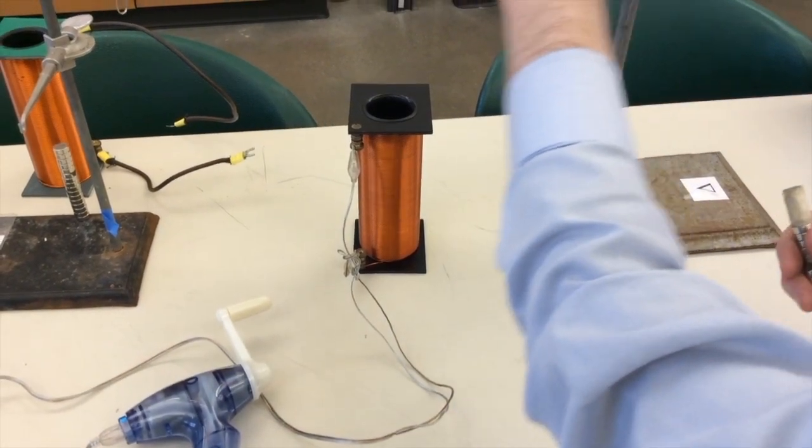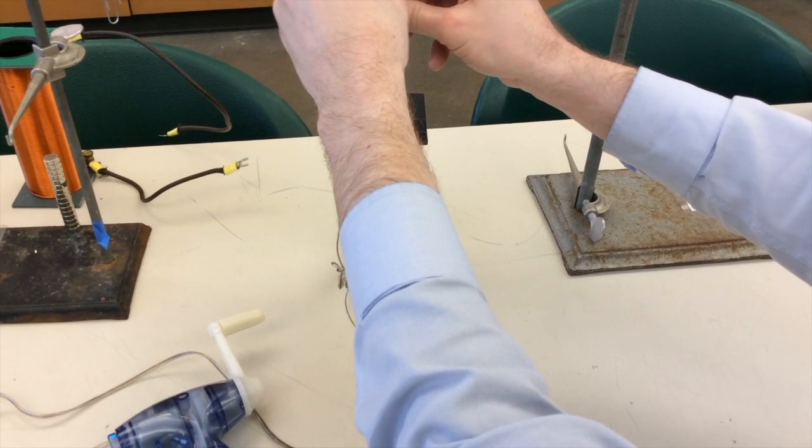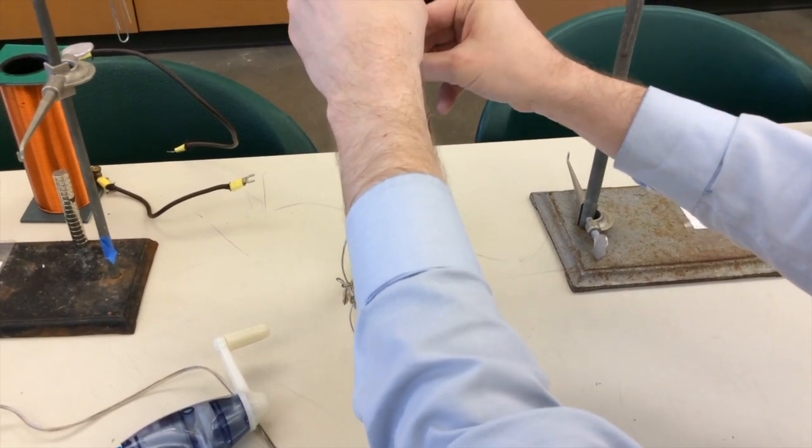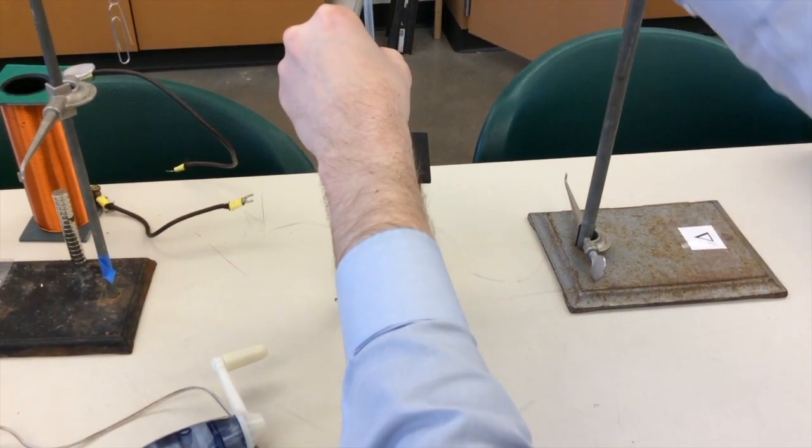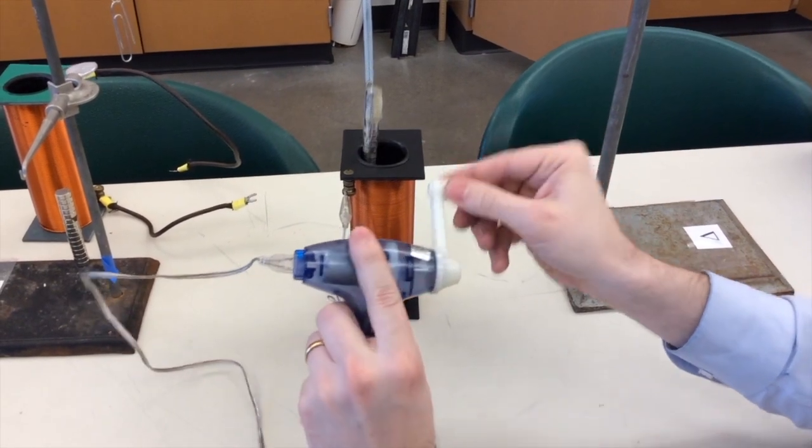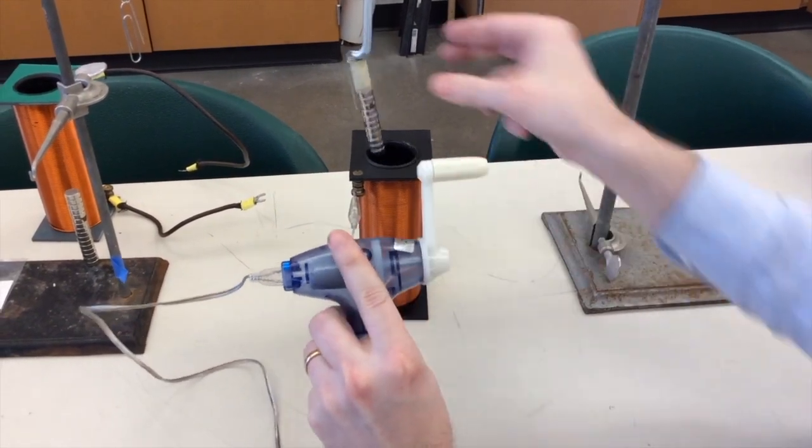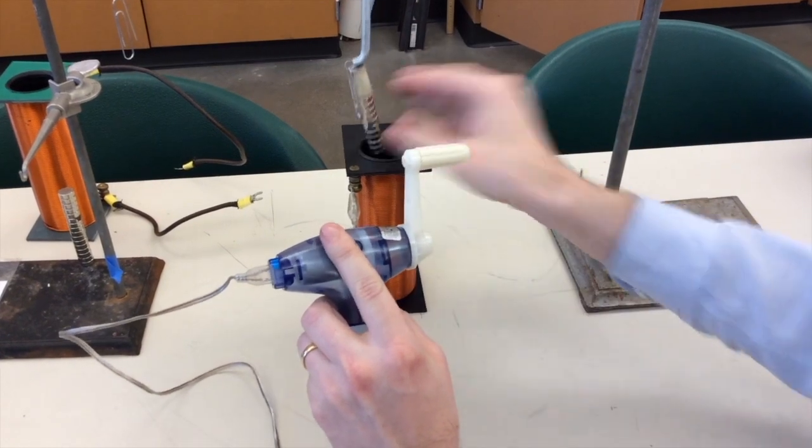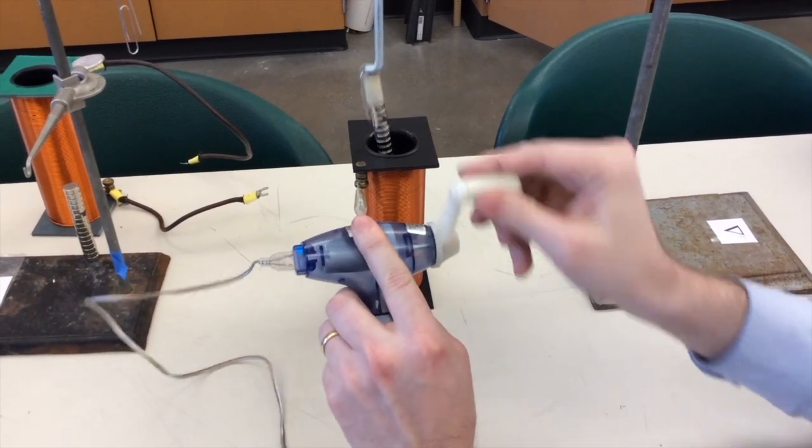I'm going to hang this magnet from a spring over the solenoid. When I turn the crank one way, the magnet is attracted to the solenoid. When I turn the crank the other way, it is repelled. If I adjust my timing perfectly, I can get the magnet to jump very high.